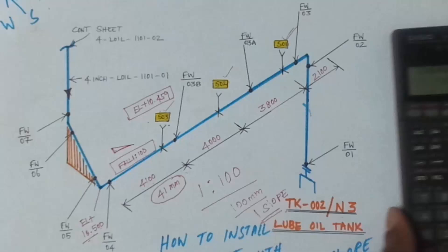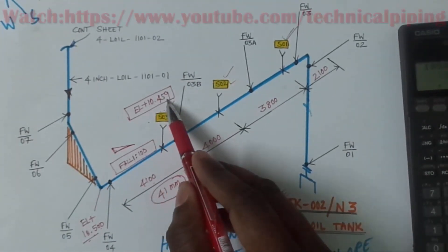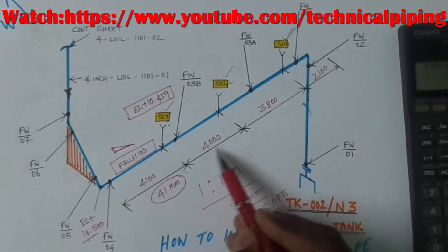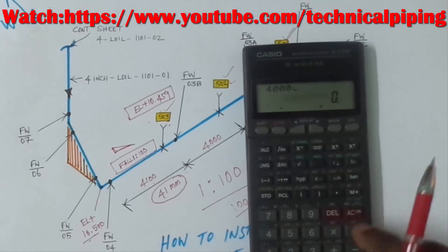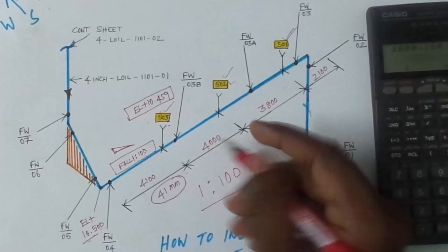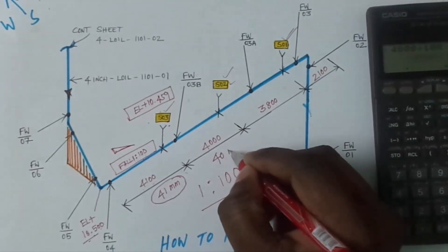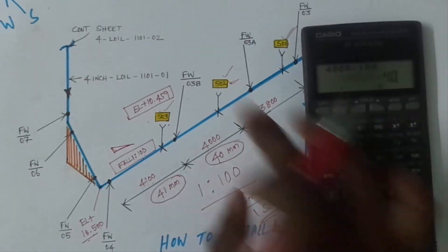Then after that support number 2. From 10.459, then after that 4 meter, so same method: 4100 mm, 1 is 100, so divided by 100—41 mm. Actually, 40 mm we have to down this support number 2.